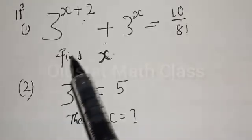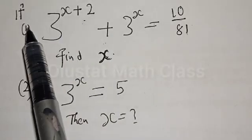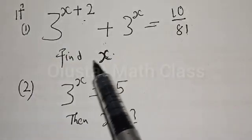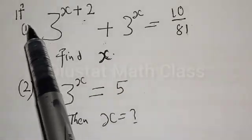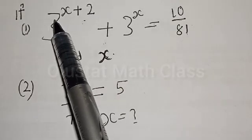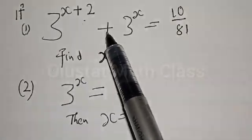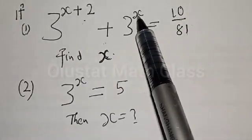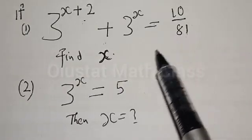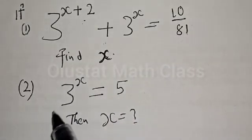Hi everyone, welcome to my class. In today's class we want to look at how we can quickly find the value of x from two given exponential equations. Number one is: if 3 raised to power x plus 2, plus 3 raised to power x, is equal to 10 divided by 81, then we are asked to find the value of x.